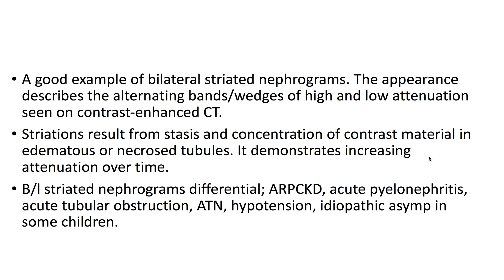This is a good example of bilateral striated nephrograms. The appearance describes the alternating bands or wedges of high and low attenuation seen on contrast-enhanced CT. The striations result from stasis and concentration of contrast material in edematous or necrosed tubules, demonstrating increasing attenuation over time.